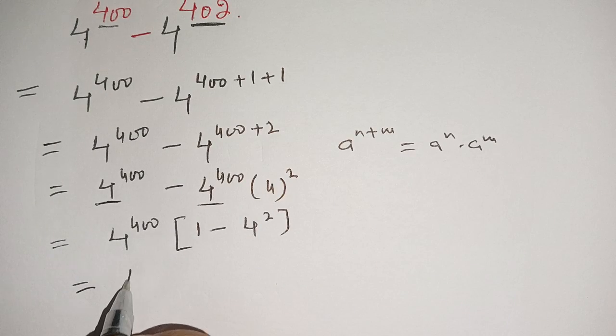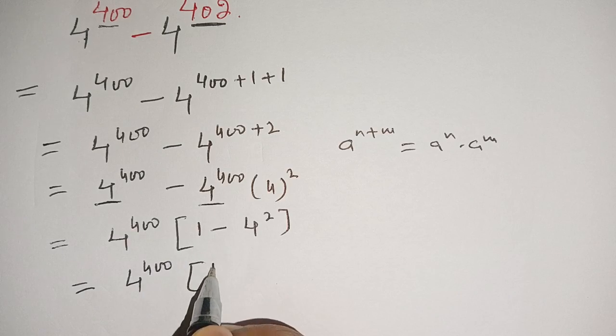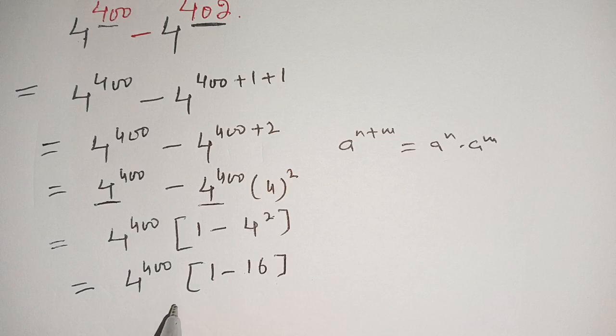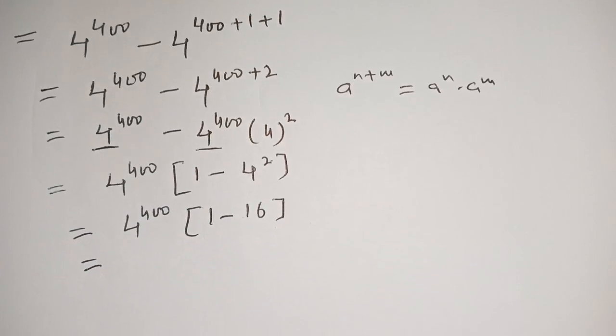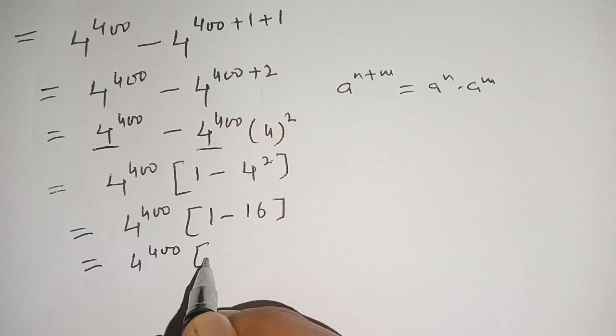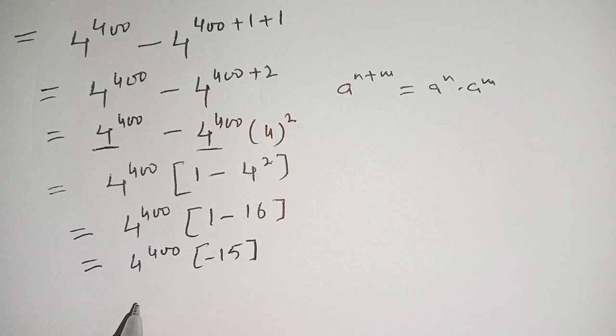We have 4 power 400 and 1 minus 4 power 2. It becomes 16, so it's equal to 4 power 400 times 1 minus 16, which becomes minus 15.